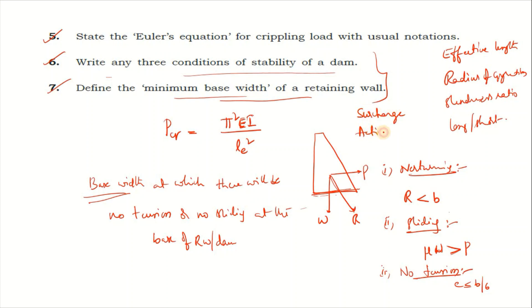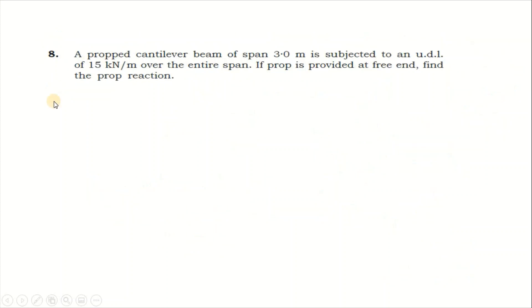In the first chapter, main definitions include surcharge. Surcharge active pressure formula is half gamma h² by 1 plus sin φ. Next, minimum depth of foundation using Rankine's formula is important.